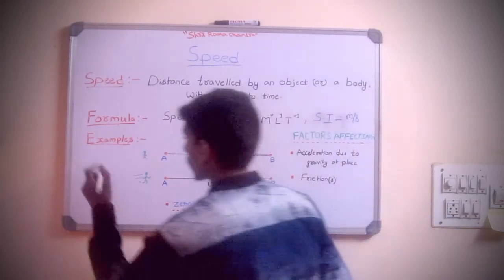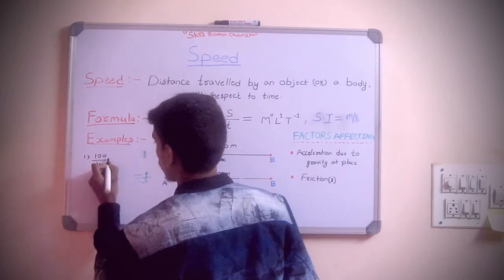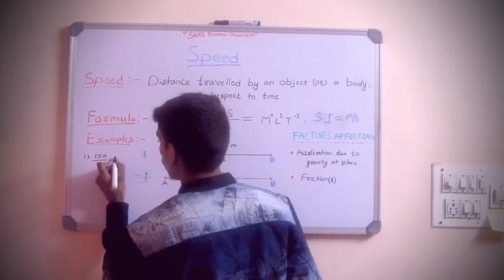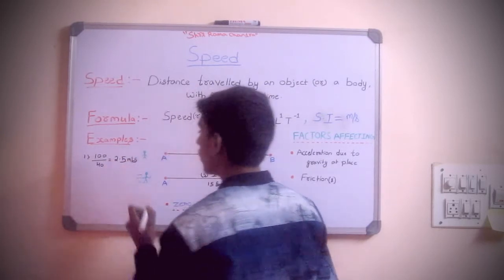To find his speed: 100 divided by 40, which equals 2.5 meters per second. This is the speed at which the boy is traveling.